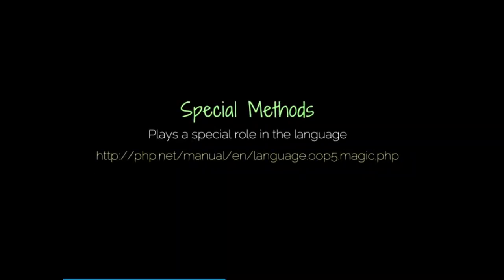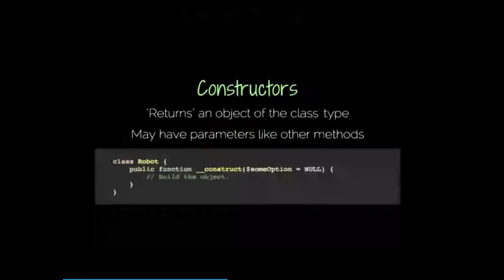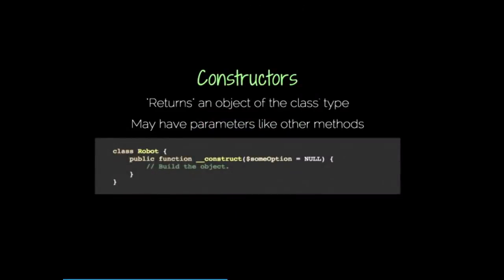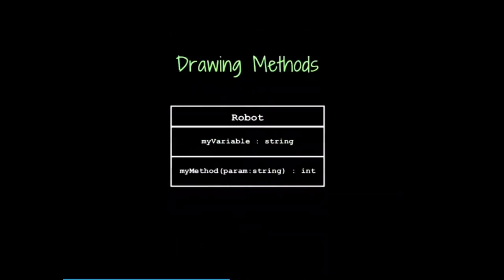There are also a few special methods within a lot of languages. There's a huge list of them with PHP, but there's really only one you need to know: that's a constructor. All a constructor does is it's a special method that actually builds the class — it takes the blueprint of the robot and gives you an actual robot. It's said to return an object of the class's type. It may have parameters like any other method. When you draw methods, you draw them in another box at the bottom: the method, any parameters, a full colon, and whatever it returns if any.